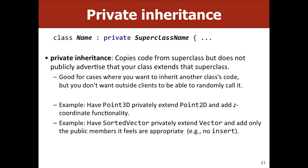If you're interested, another way to get around this is composition. Instead of saying 'I'm a SortedVector and I'm also a Vector,' you keep a vector as a private instance variable. Whenever you need to call get-at-index, your method just calls vector.get() on that instance variable. This is called composition and is a more intuitive alternative to private inheritance.